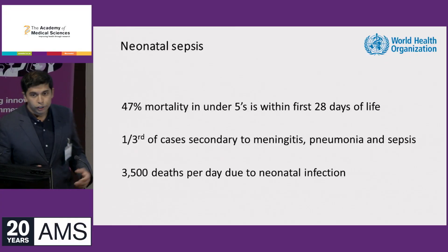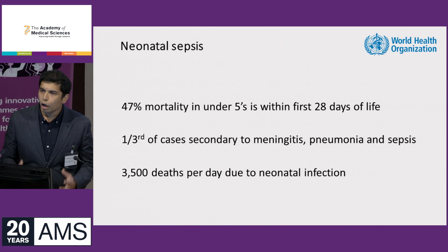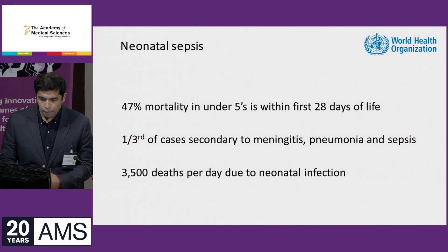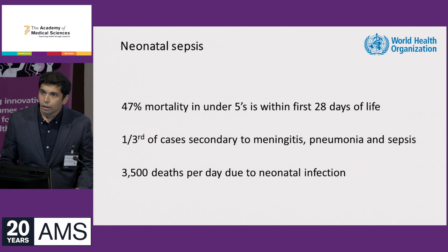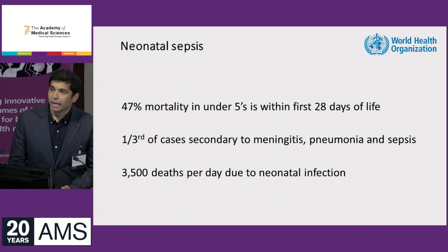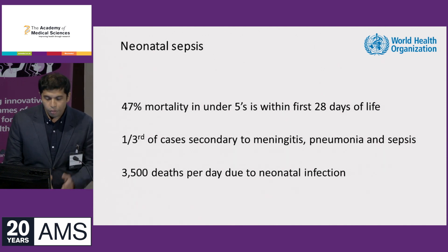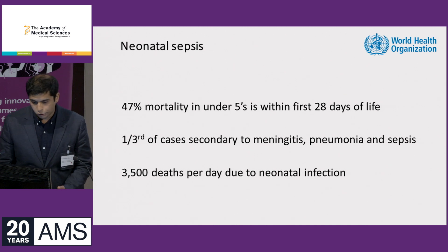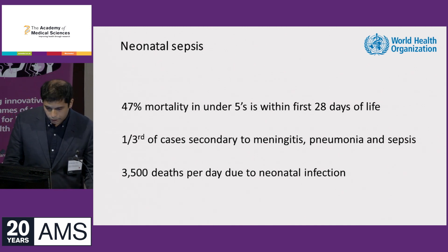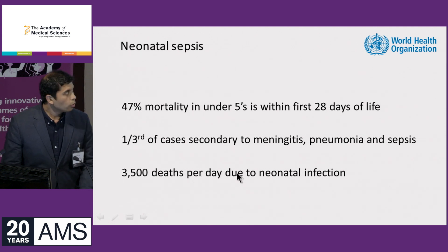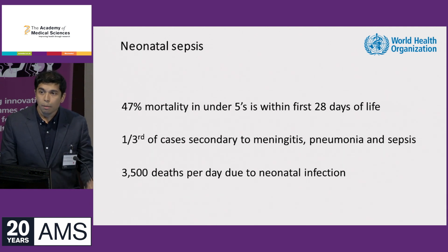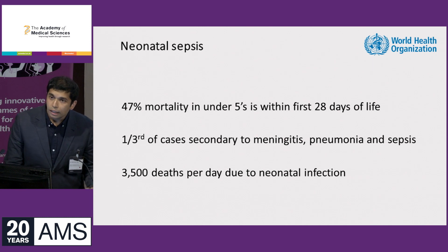Let's start with the big picture: neonatal sepsis. We know it's a huge global issue. If you look at all deaths in children under the age of five, 47% occur in the first 28 days of life, and of those deaths one-third are due to infection such as meningitis, pneumonia, and sepsis. This equates to 3,500 deaths per day, which is a huge amount. What's important to point out is that a large number of these are potentially preventable.